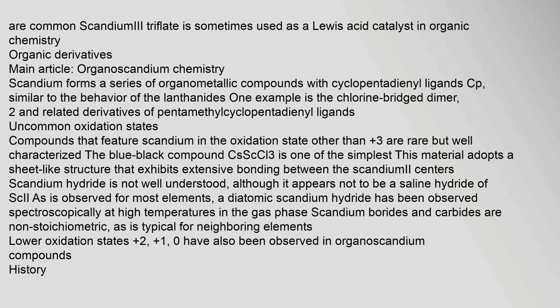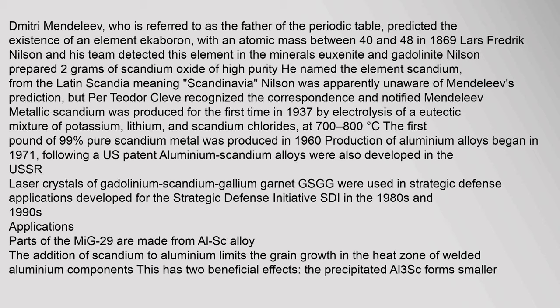Dmitry Mendeleev, who is referred to as the father of the periodic table, predicted the existence of an element ekaboron with an atomic mass between 40 and 48. In 1869, Lars Fredrik Nilsson and his team detected this element in the minerals uexanite and gadolinite.